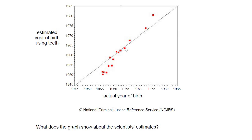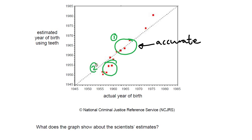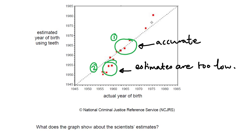Although it's a two-mark question, there are three possible points. First: near the middle of the graph, between the years 1960 and 1970, the estimates are relatively accurate. Second: between 1955 and 1960, they're not very accurate — you could say their estimates are too low. Third: for the top two data points, the estimates are not very accurate either — their estimates are too high.